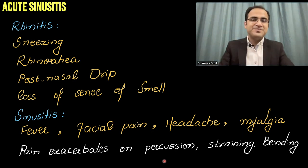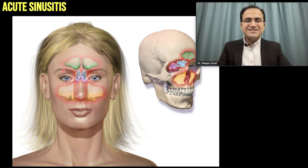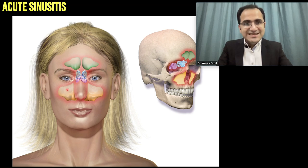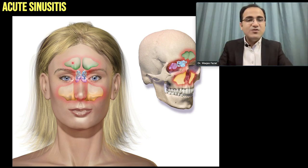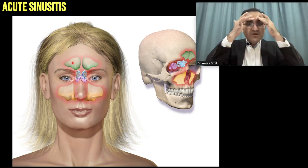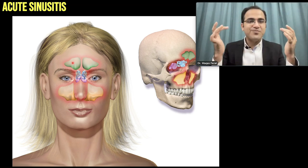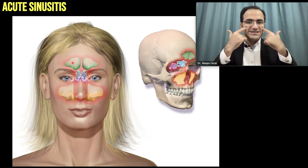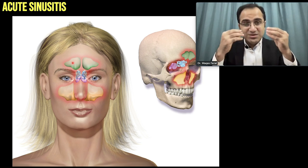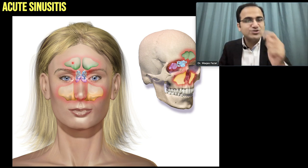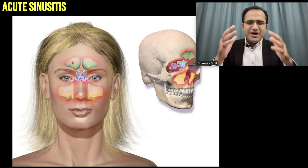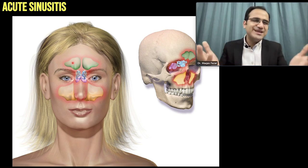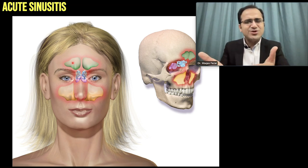Acute sinusitis can affect different sinuses. In frontal sinusitis, pain is above the eyebrows. In maxillary sinusitis, pain is in the cheek. In ethmoidal sinusitis, pain is mostly felt at the bridge of the nose. Overall, there is diffuse facial pain due to inflammation of the sinuses by viruses or bacteria.